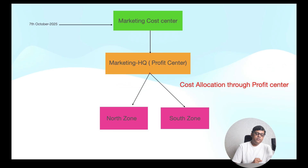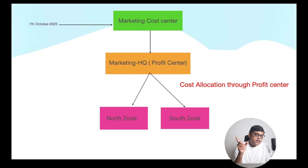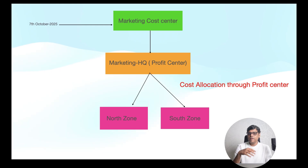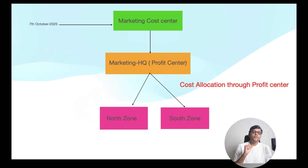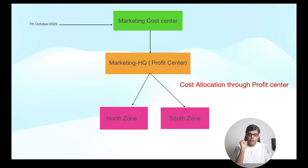Initially, all the cost is recorded with the marketing cost center. Through profit center allocations — the right term is assessment or distribution — the cost gets allocated. I'm going to use the distribution method here. If you go for assessment, you use secondary cost elements. We want to generate the profitability report using the profit center. Initially, the cost will be recorded with one cost center and one profit center, and at month end, the cost will be allocated to the two profit centers. This is the business example.